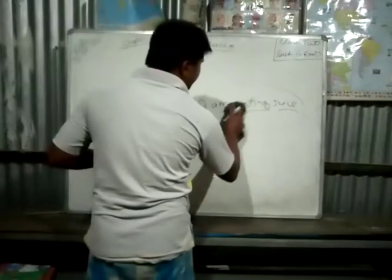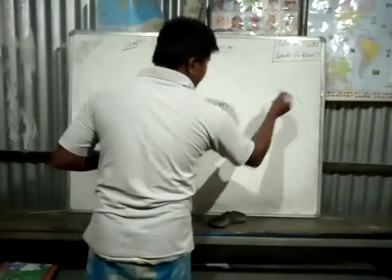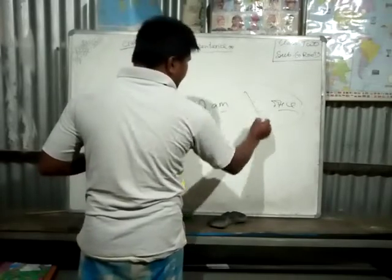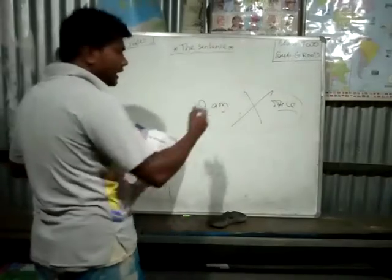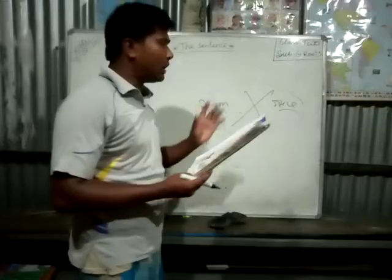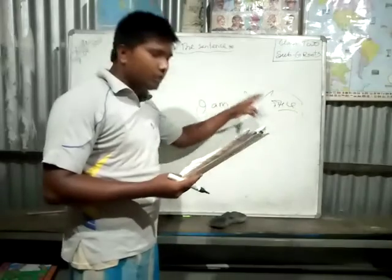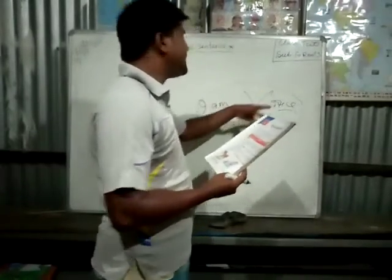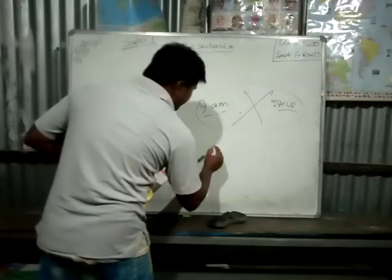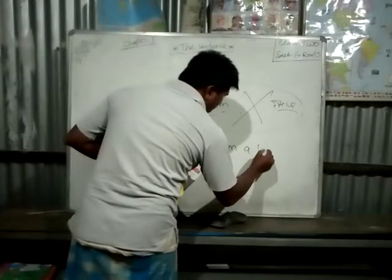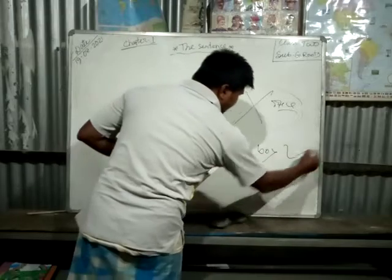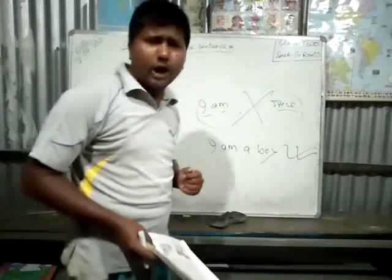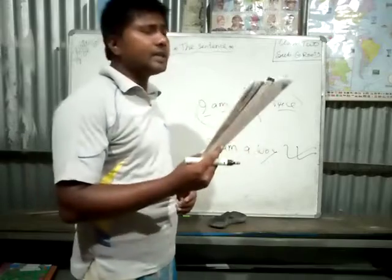Suppose if I say, 'I am rice' — is it correct? No, it is incomplete. The group of words is there, but it does not make complete sense. But if I say 'I am a boy,' that is complete sense. You have understood that he is a boy. That is the sentence.